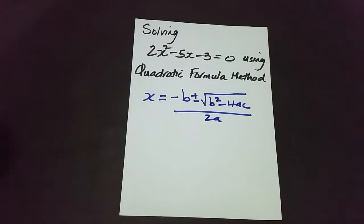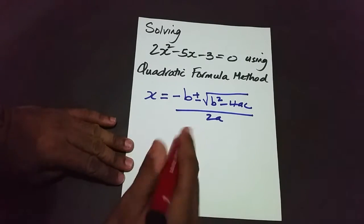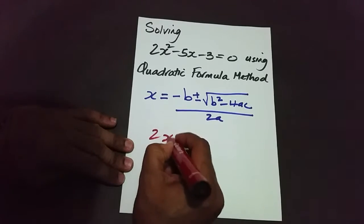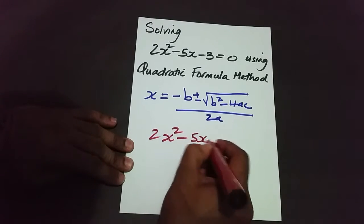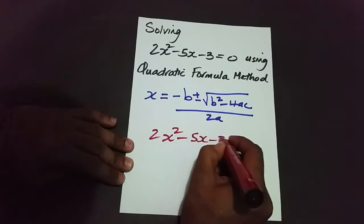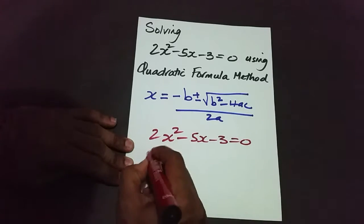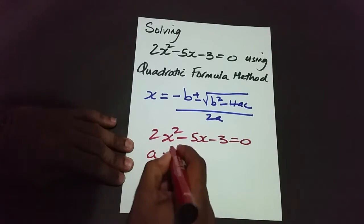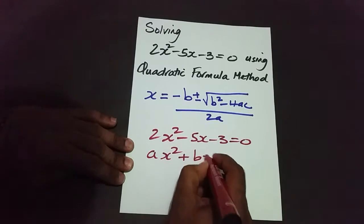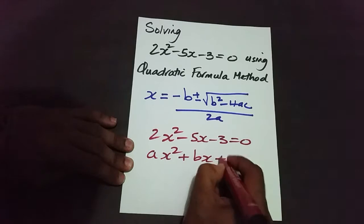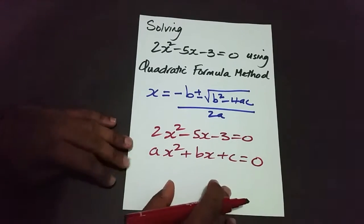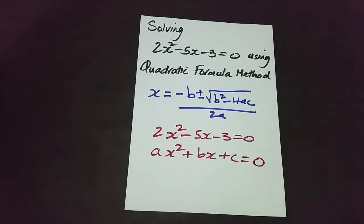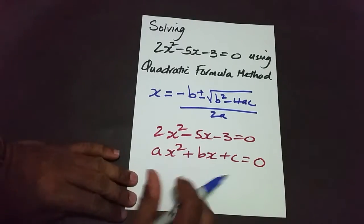We have to ask ourselves: is the quadratic equation 2x squared minus 5x minus 3 equals 0 in the form ax squared plus bx plus c equals 0? And it is. So based on that fact, we can proceed to identify our values.